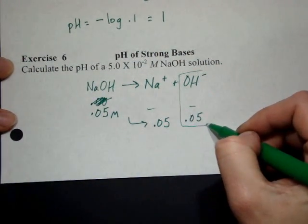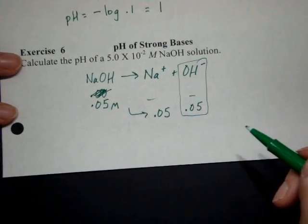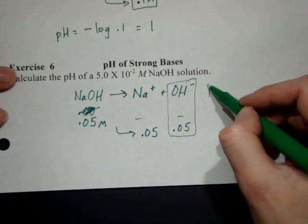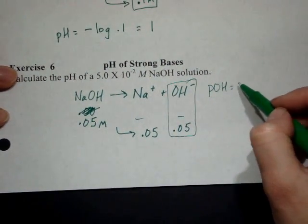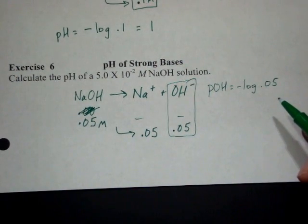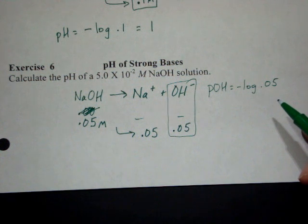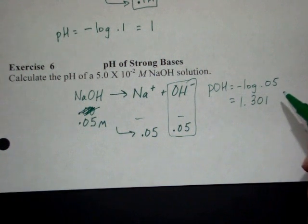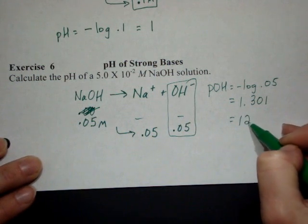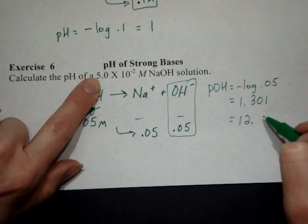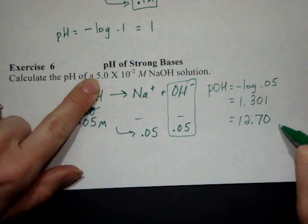Now if I use this, think about what I'll be finding. Since I'll have pOH then, negative log of 0.05 is 1.301, 14 minus that answer gives me 12.69897. So basically we have two significant figures here, so we'd want to say 12.70.